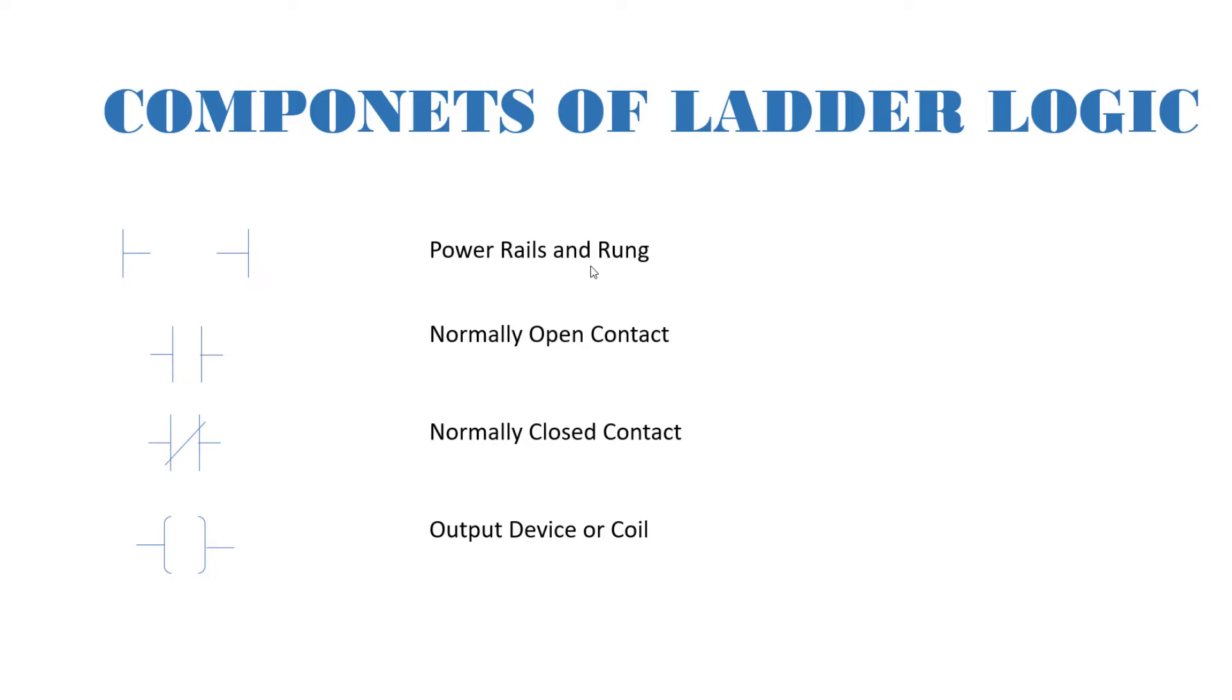The next item is our normally open contacts which is represented by a symbol that looks like a capacitor, a normal capacitor symbol. And then we have normally closed contacts, also looks like a capacitor symbol but crossed indicating that this is an inverted signal.